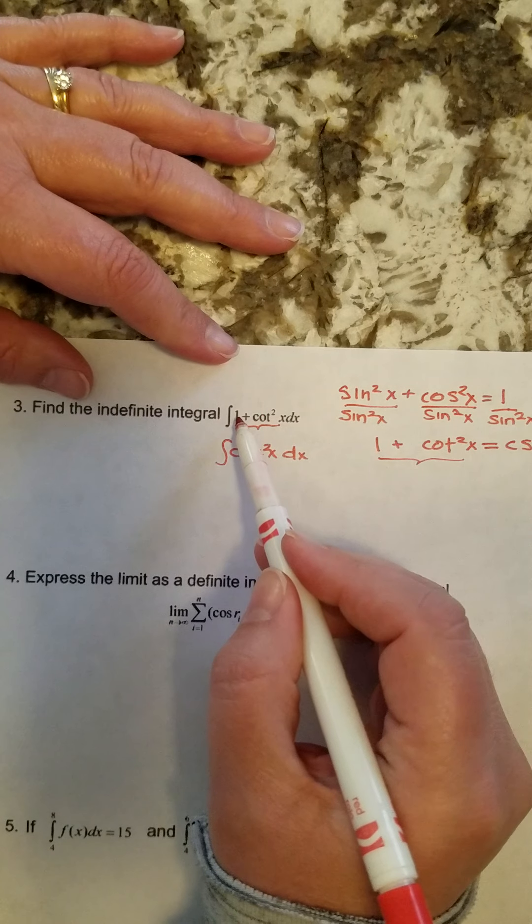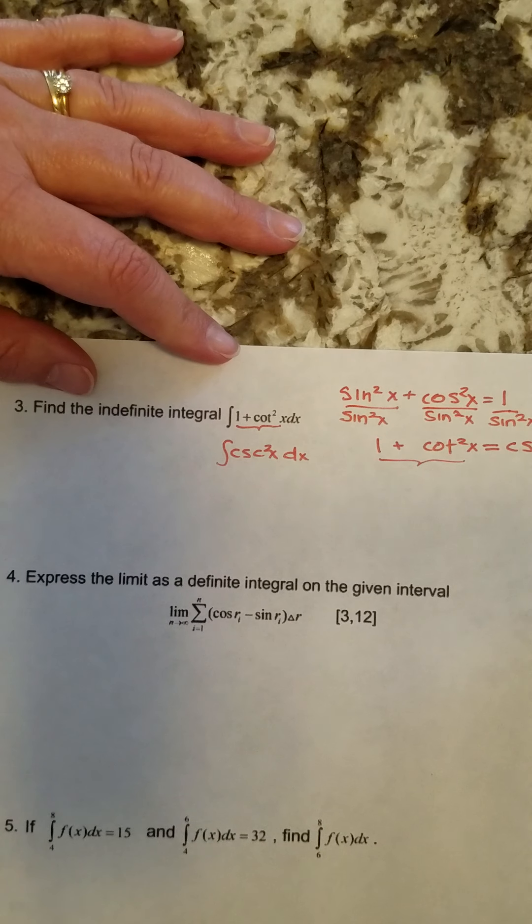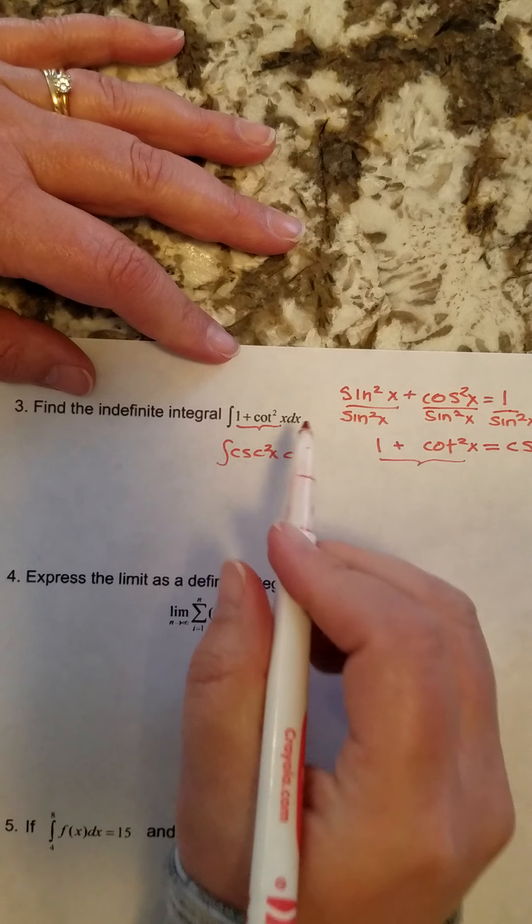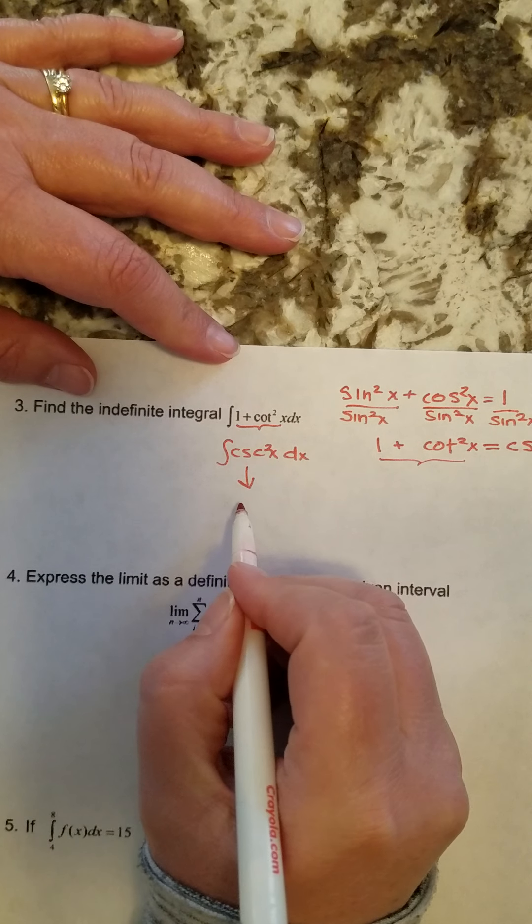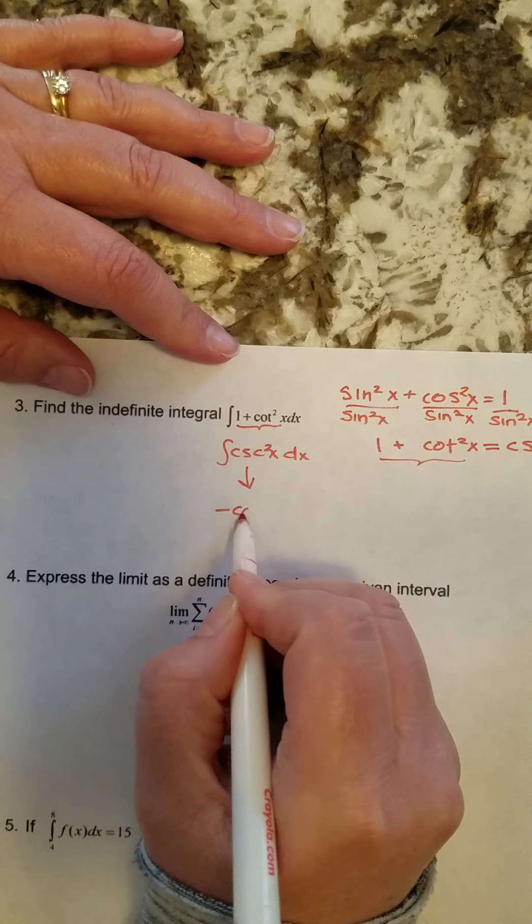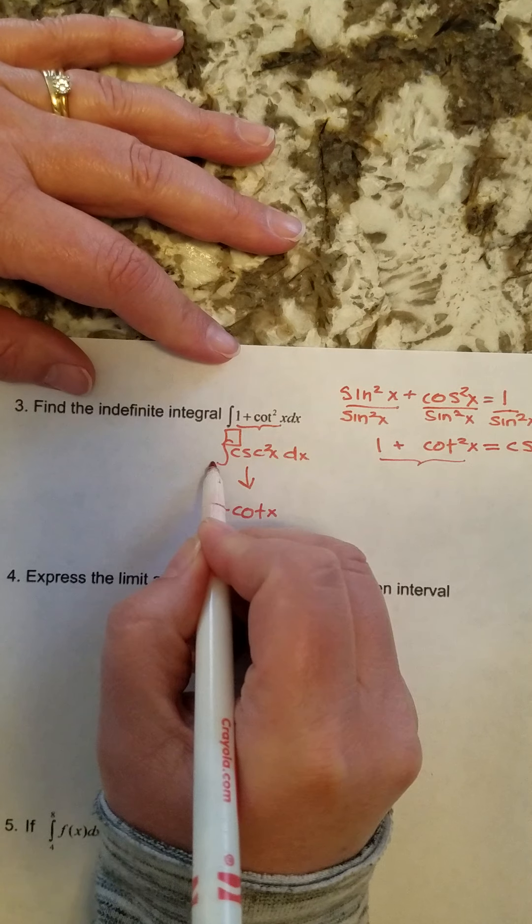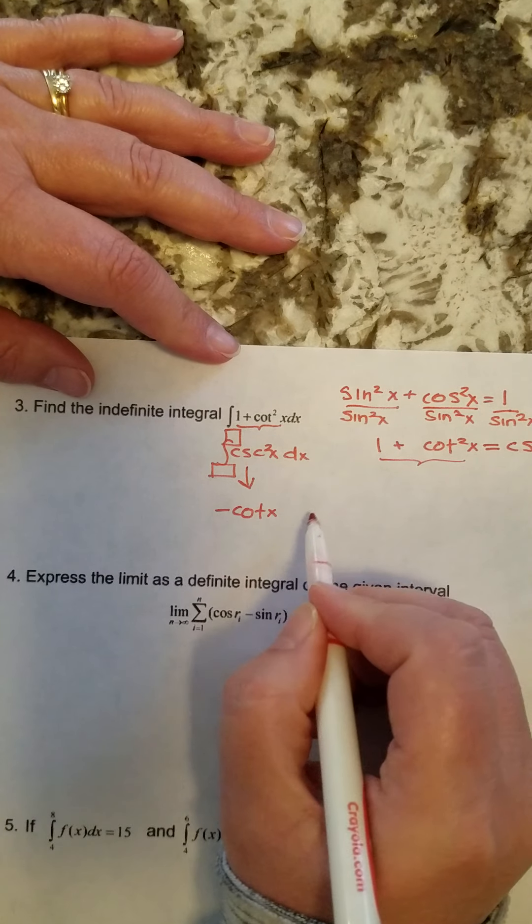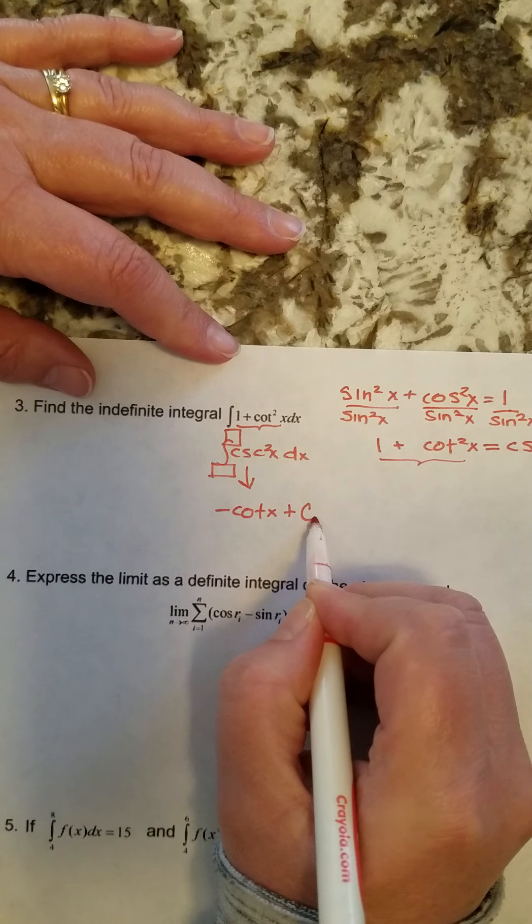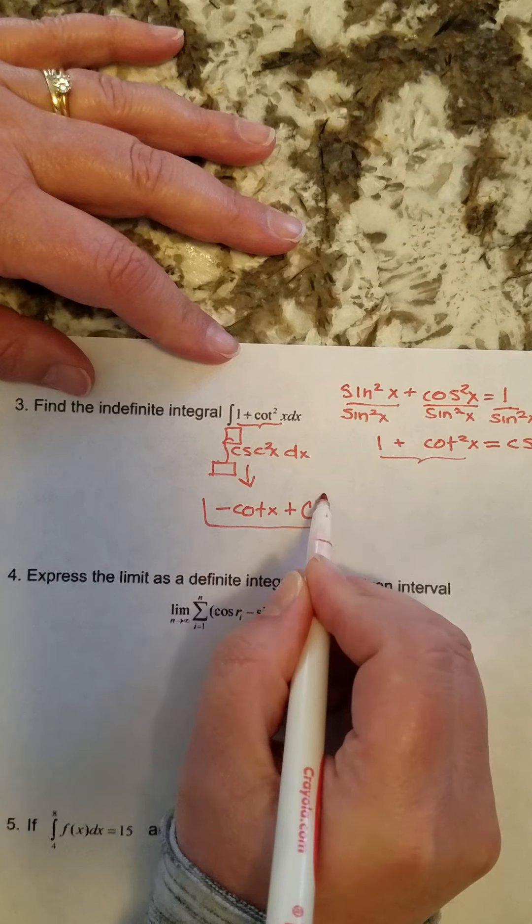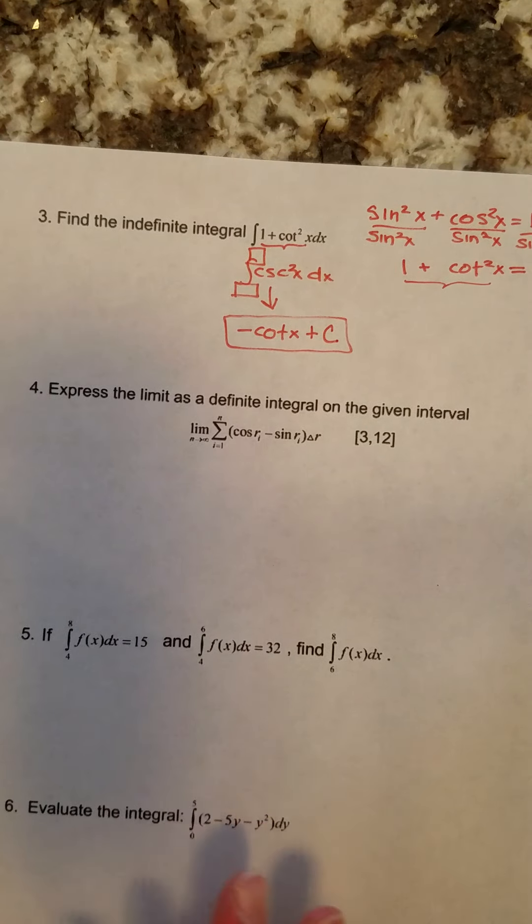Because even though I know the antiderivative of 1, I do not know an antiderivative of cotangent squared. So now we find the antiderivative of cosecant squared of x, which is negative cotangent of x. And then since there are no numbers at the top and bottom here, this is an indefinite integral, that means I would need a plus c here at the end. Alright, next, question number four.